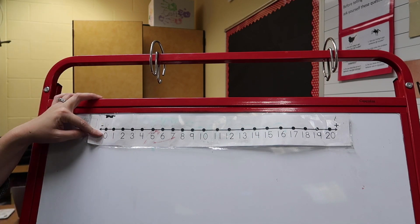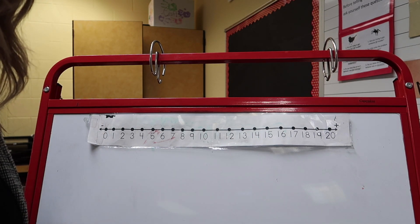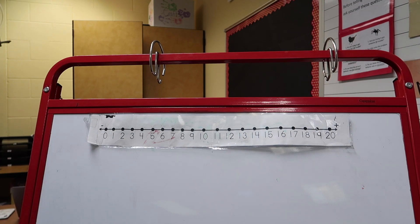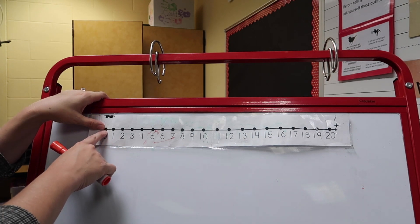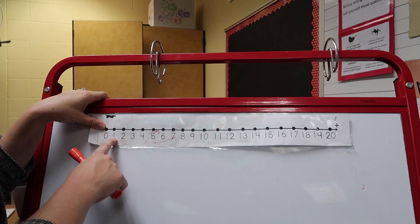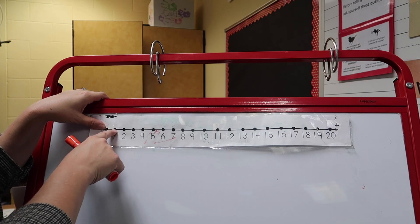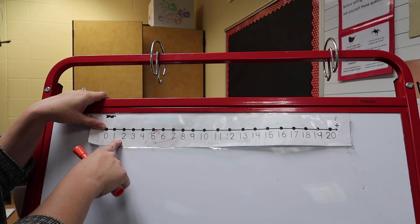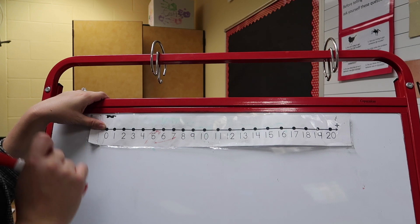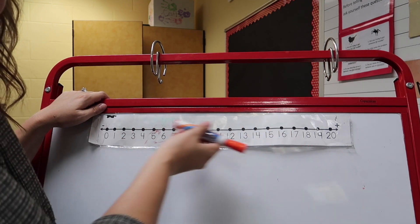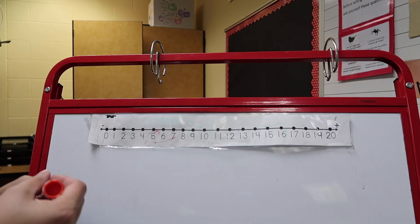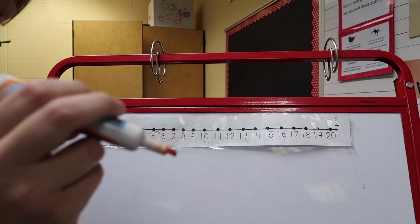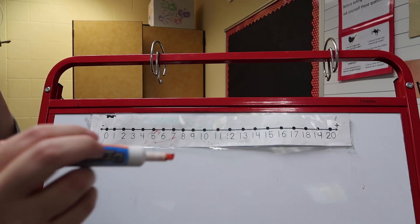It starts at zero and then it goes up and you go up and down the line by doing what I call bunny hops. So if a bunny were to hop from zero to one it would go jump, and if it were to jump from one to two it would go jump. So we're going to bunny hop all the way up this line together. And I'm going to do it with a marker so that you can follow along with the bunny hops.